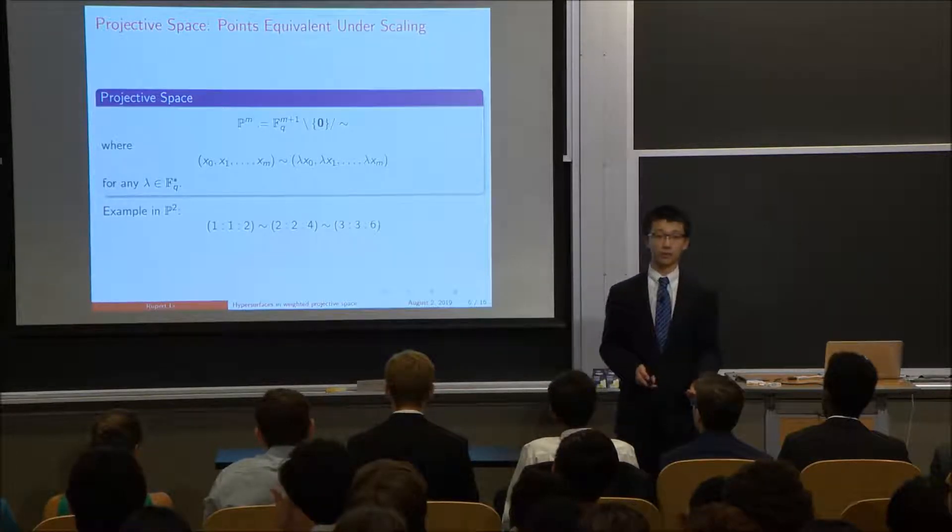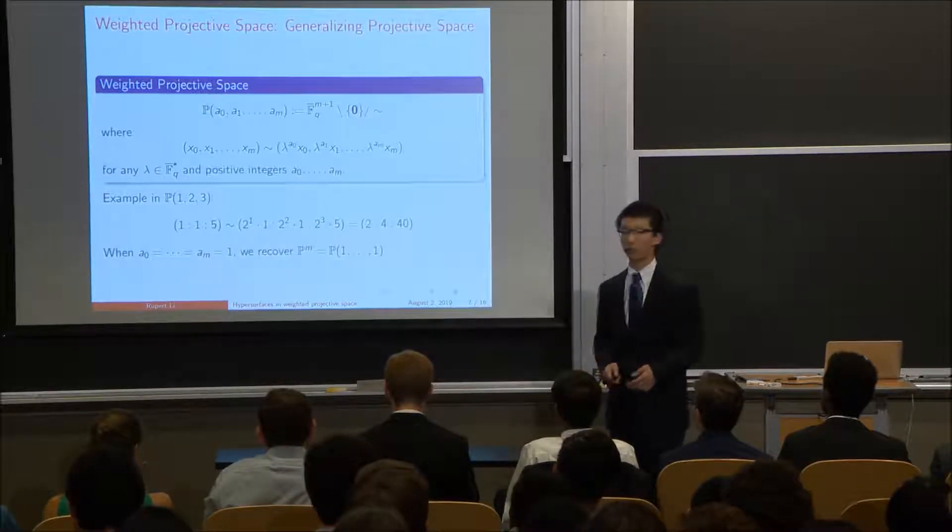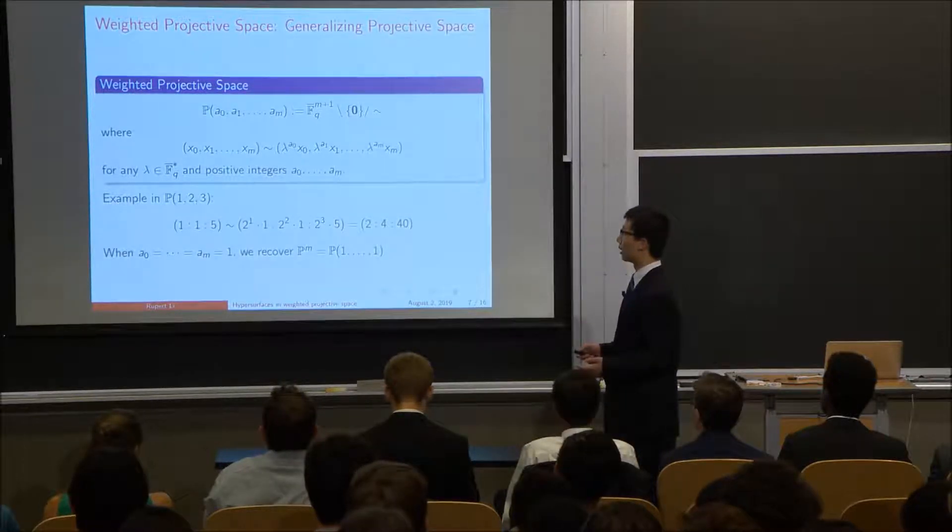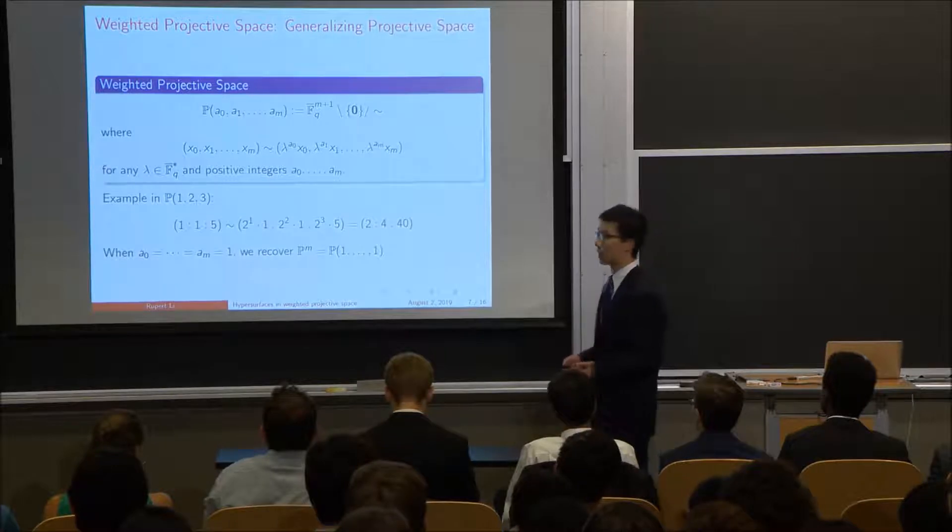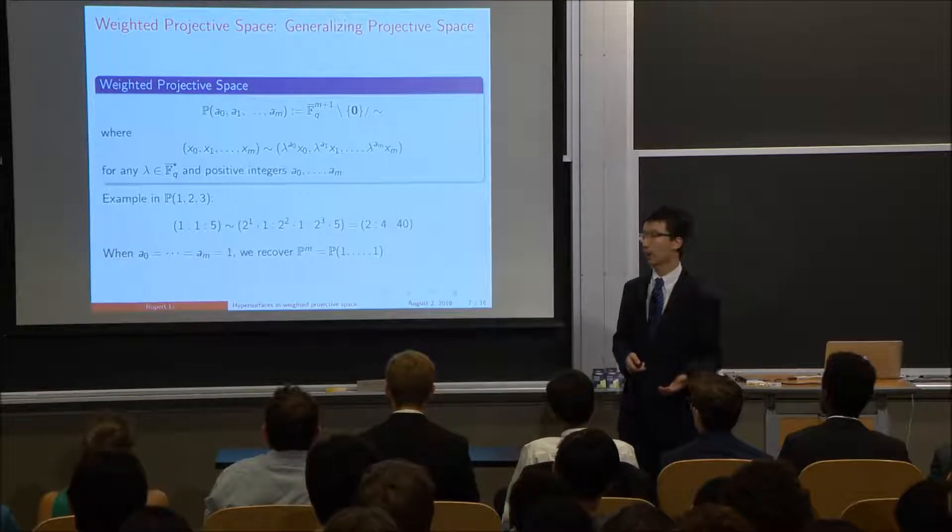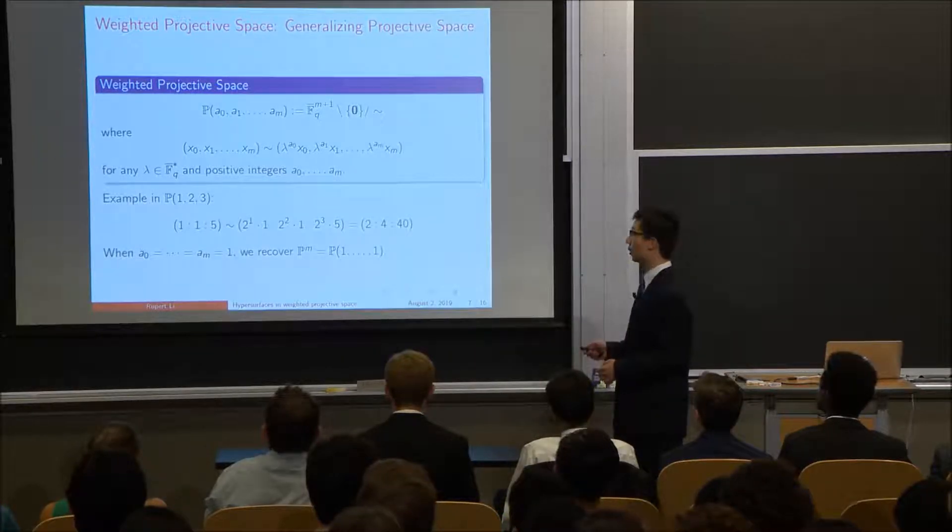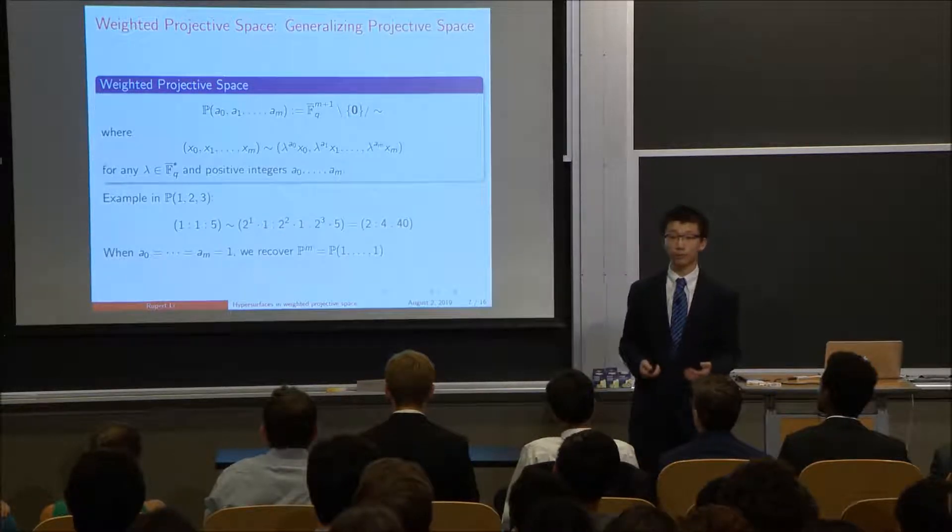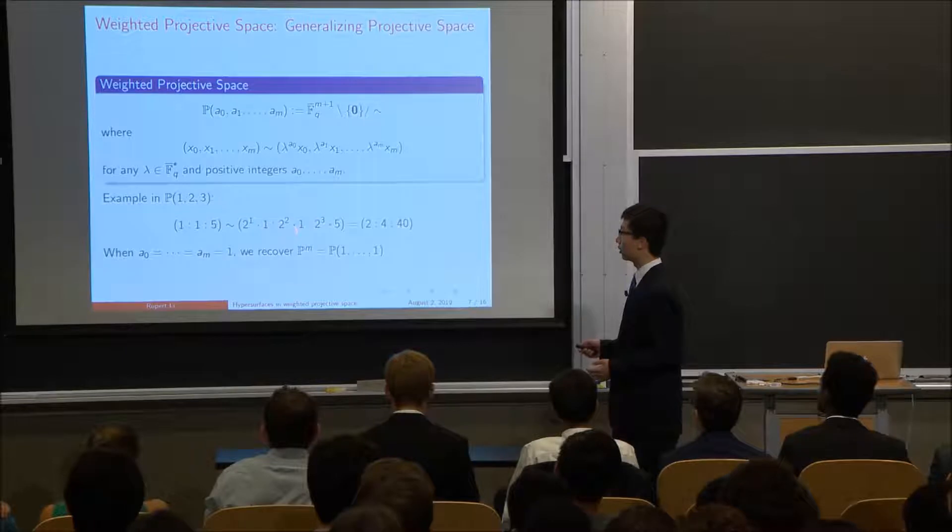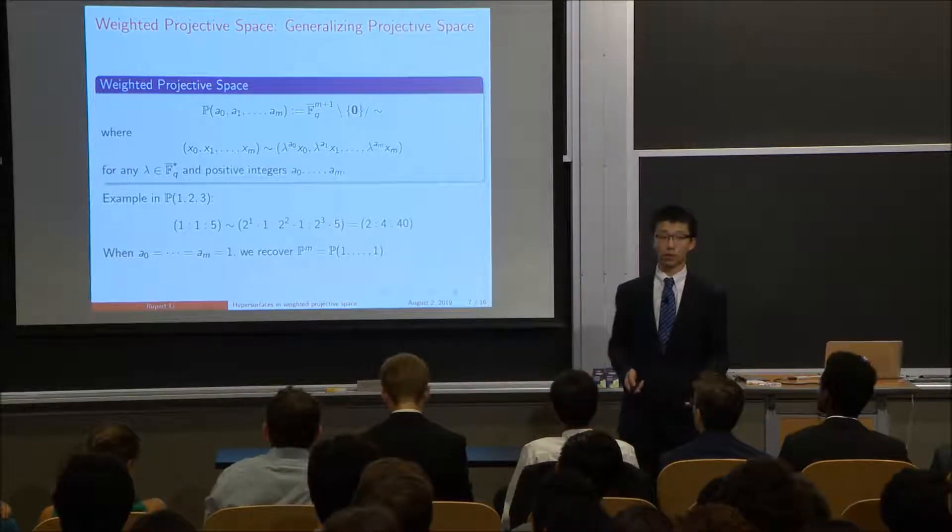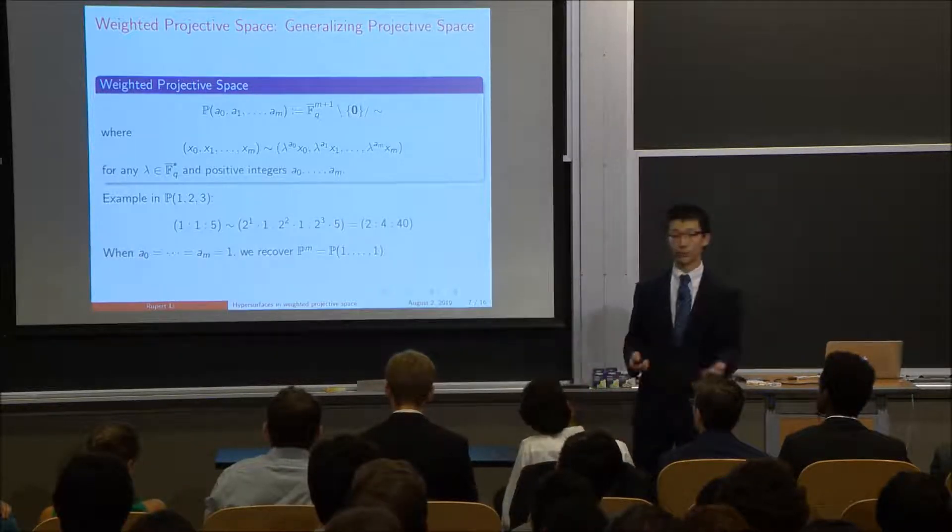So my project works in weighted projective space, though. And that's a generalization of projective space. So this is also the formal definition of weighted projective space. And the difference here is that every single coordinate now has a positive integer weight that dictates how quickly it scales. So instead of the point 1, 1, 5 going to 2, 2, 10 by scaling up by a factor of 2, I have to scale by 2 to the 1, 2 to the 2, and 2 to the 3 if my weights are 1, 2, and 3 to yield 2, 4, 40. Notice that when all the weights are 1, then we recover our definition of projective space.